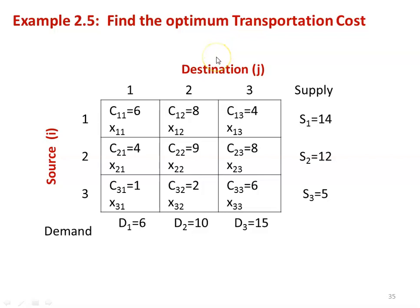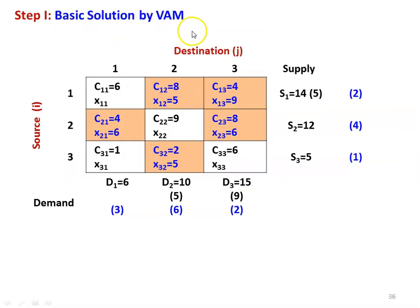Now we take Example 2.5: find the optimum transportation cost for the transportation problem. We have three sources and three destinations. The source capacities are S1 = 14, S2 = 12, and S3 = 5. The destination requirements are D1 = 6, D2 = 10, and D3 = 15. This is the cost matrix of the transportation problem. First, we check for balance: total supply is 14 + 12 + 5 = 31 and total demand is 6 + 10 + 15 = 31. Total supply equals total demand, so it is a balanced problem.